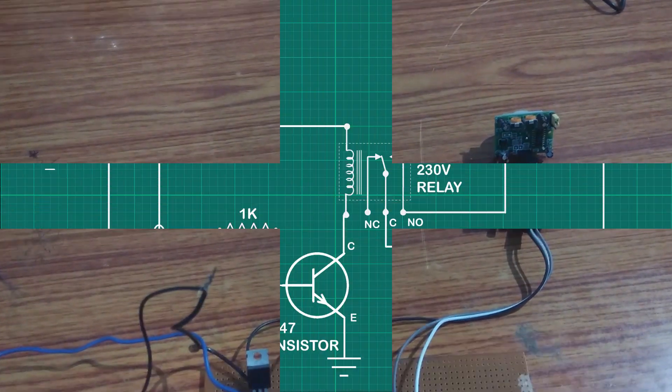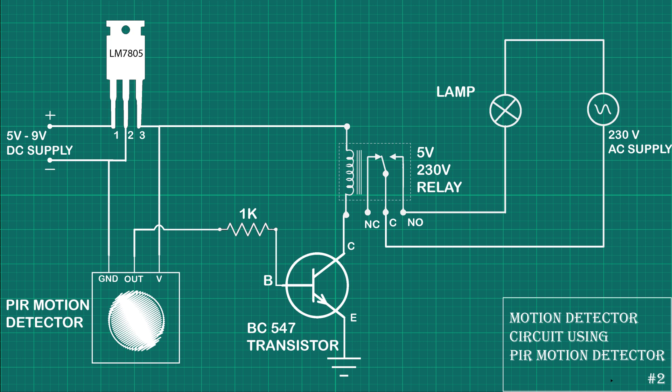So this is how you can troubleshoot PIR motion detectors. If you want to turn on and off AC voltage loads, then you can use this circuit. I have used the previous circuit just for testing. I hope that you understand how to troubleshoot PIR sensors.